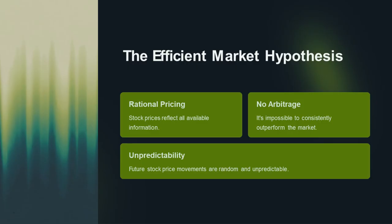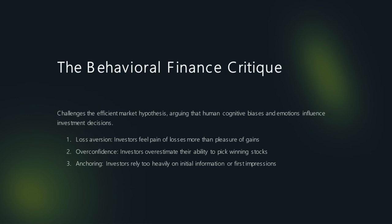First up, let's talk about the efficient market hypothesis. Malkiel introduces this theory, which suggests that stock prices reflect all available information and are therefore impossible to consistently outperform through stock selection or market timing alone. But Malkiel doesn't stop there — he also explores the critique from behavioral finance, highlighting how psychological biases can influence investor behavior and lead to market inefficiencies.